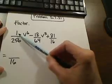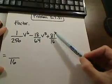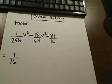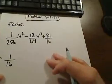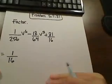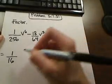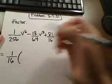So if I look at the numerators, the 1, the 18, and the 81, they share at most, the biggest thing that they share is a 1. And so I'm going to be taking out a 1/16 for the numbers there. And there is no GCF for the variables, so those will just stay the way that they are.